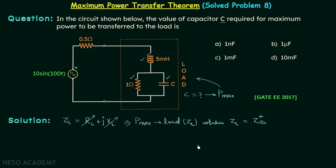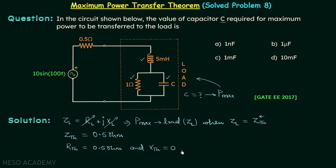When you find the Thevenin impedance of this network, it equals 0.5 Ohm. So ZTH equals 0.5 Ohm, which means ZTH is purely resistive: RTH equals 0.5 Ohm and XTH equals 0. To find ZTH, you open-circuit the load and short-circuit the source, giving a resistance of 0.5 Ohm between the two terminals.